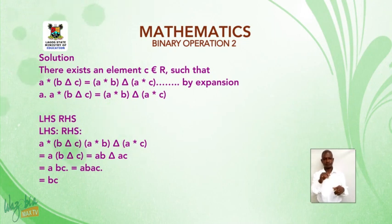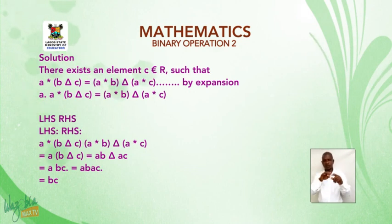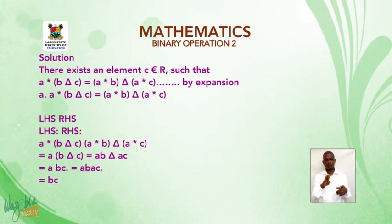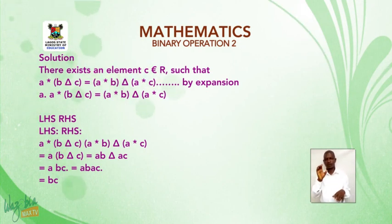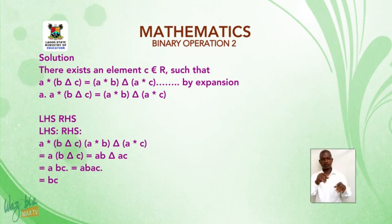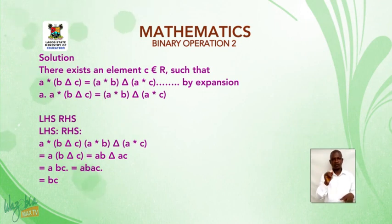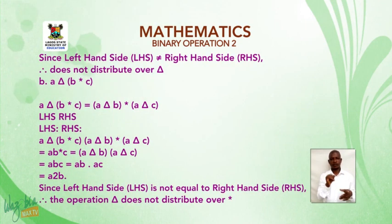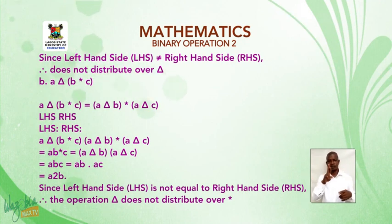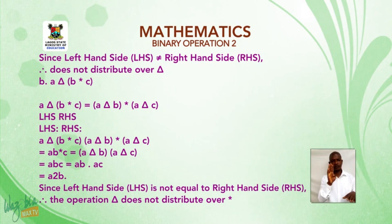Checking left distributivity: the left-hand side, a★(b Δ c) = a★(b/c) = a·(b/c) = ab/c. The right-hand side, (a★b) Δ (a★c) = ab Δ ac = ab/(ac) = b/c. Since left-hand side ab/c is not equal to right-hand side b/c, therefore star does not distribute over delta.